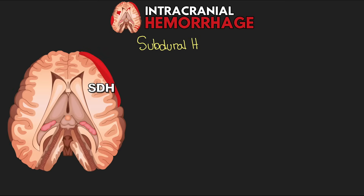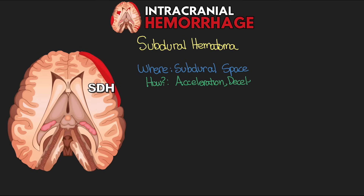Next is the subdural hematoma, found in the subdural space between the dura and the arachnoid mater. It is typically caused by acceleration, deceleration, or rotational injury, which ruptures the bridging veins crossing the subdural potential space. This happens because the brain can move inside the skull, but the venous sinuses where the bridging veins drain are fixed, so excessive brain movement can tear those veins and cause bleeding into the subdural space.